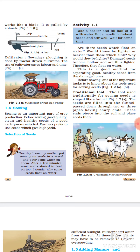Isliye woh seeds paani mein upar tairne lagte hai. This is a good method for separating good, healthy seeds from the damaged ones. Yeh bahut acha method hai jisse ki hum achhe aur healthy seeds alag kar sakte hai damaged seeds se. Before sowing, one of the important tasks is to know about the tools used for sowing seeds. Sow karne se pehle, pata hona chahiye ki kaunse tools iske liye kaam mein liye jate hai.